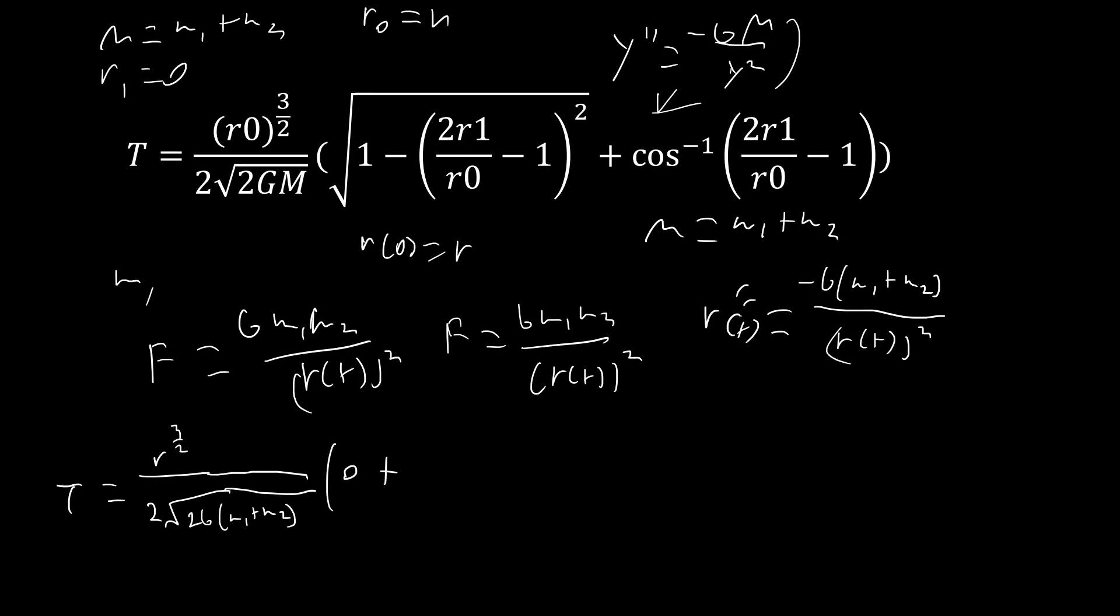For the inverse cosine, again when r1 is zero, this whole bit is going to be zero, and so it's inverse cosine of negative one, which is just pi. So if we go ahead and simplify our answer, you can see that we can pretty easily arrive at the answer t equals πr^(3/2) over 2√(2G(m1+m2)).